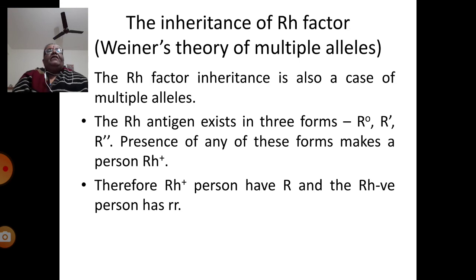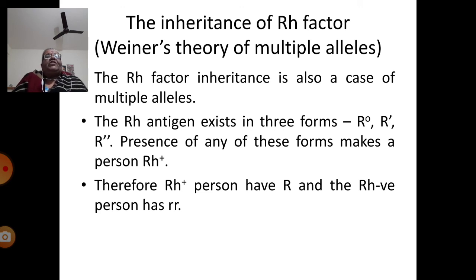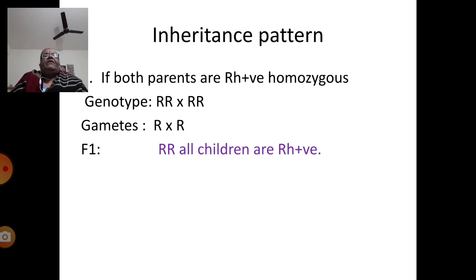For the inheritance of Rh factor, Wiener put forward a theory popularly called Wiener's Theory of Multiple Alleles. The Rh factor inheritance is also a case of multiple allelism. The Rh antigen exists in three forms: R₀, R′, and R″. The presence of any of these forms makes a person Rh positive. An Rh positive person carries capital R, while an Rh negative person carries homozygous small rr of this gene.